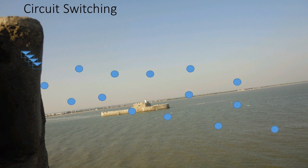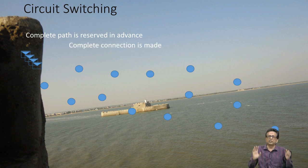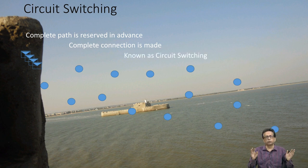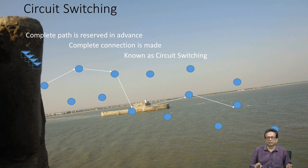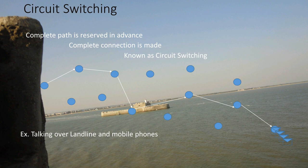Let us look at this through a simple example. In the case of a connection-oriented service, what we normally follow is called circuit switching. In this case, the complete path is reserved in advance and the complete connection is made first — only then does data transmission take place. That is why it is known as circuit switching: you first complete the circuit and then start sending. This is like inline phones or mobile phones — you establish the connection first, send the ring across, and once it is accepted the connection is established, then communication begins.